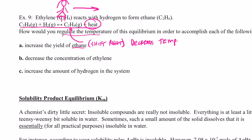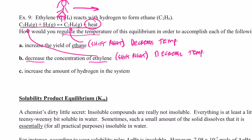For part b, we want to decrease the concentration of ethylene (C₂H₄), which means we want to use it up — shift it right again. We just learned that for an exothermic reaction, to shift right you decrease the temperature.